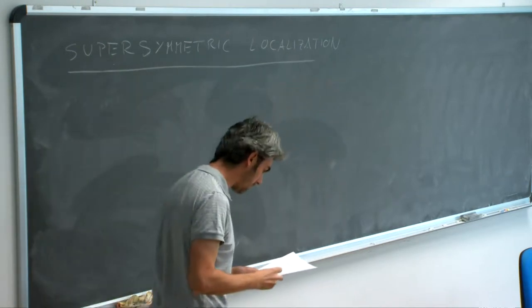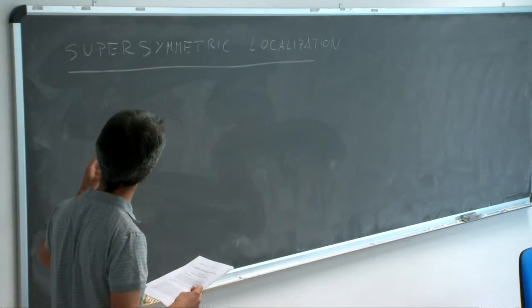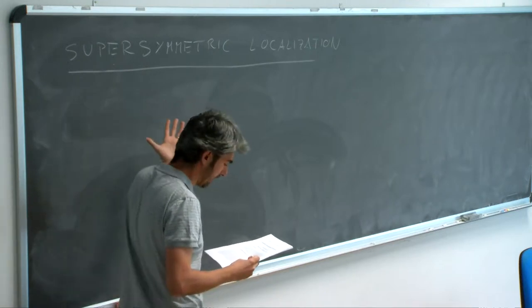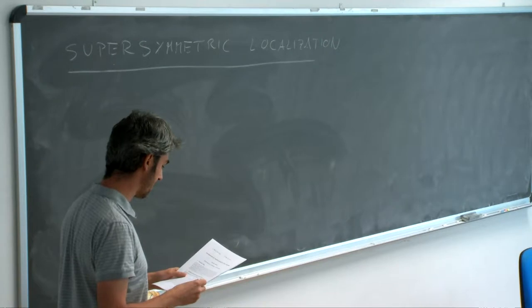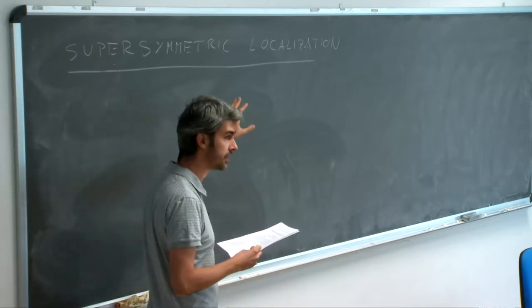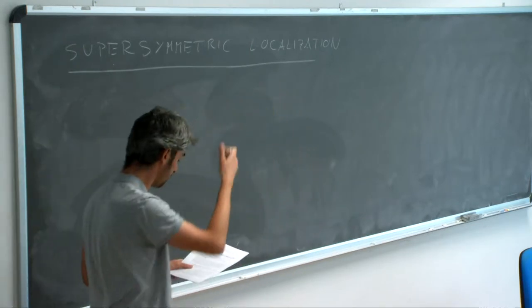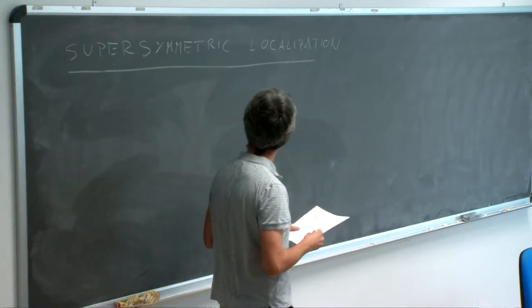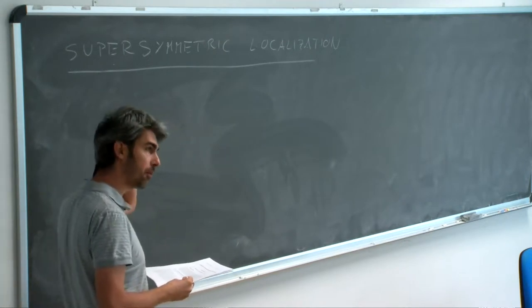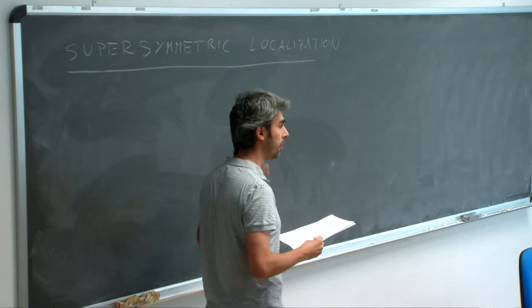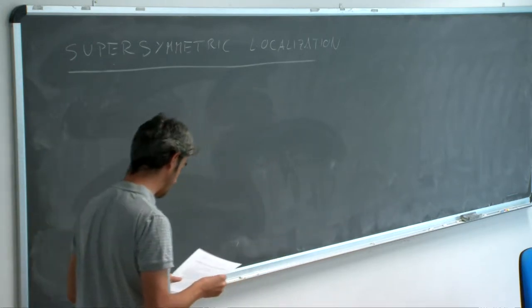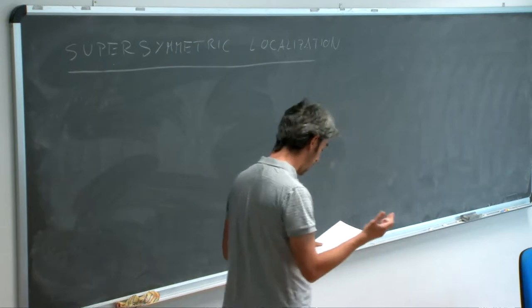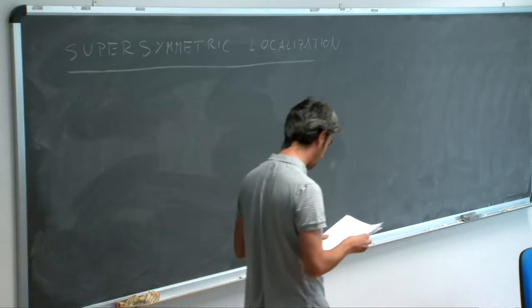In this lecture we'll talk about supersymmetric localization. You've already had the first lecture by Leo that essentially explained the basic idea behind localization, although in a much simpler realization. What I will do is spell out some of the details in the full quantum field theory setup. Supersymmetric localization is a very powerful technique which allows us to perform exact non-perturbative computations in certain field theories. It is an infinite-dimensional version of the equivariant localization that Leo explained.